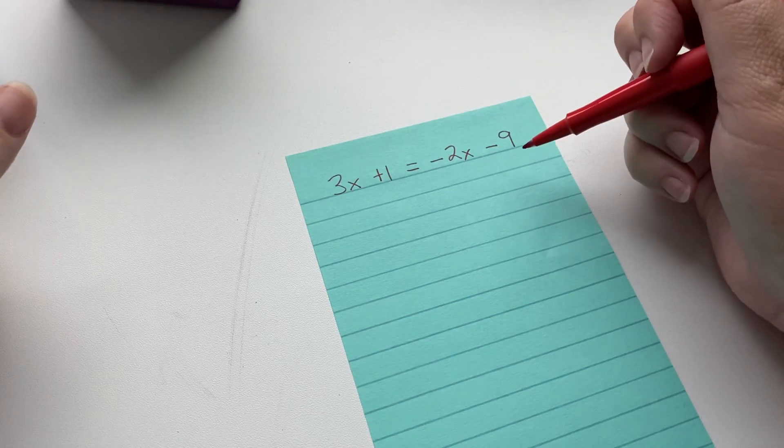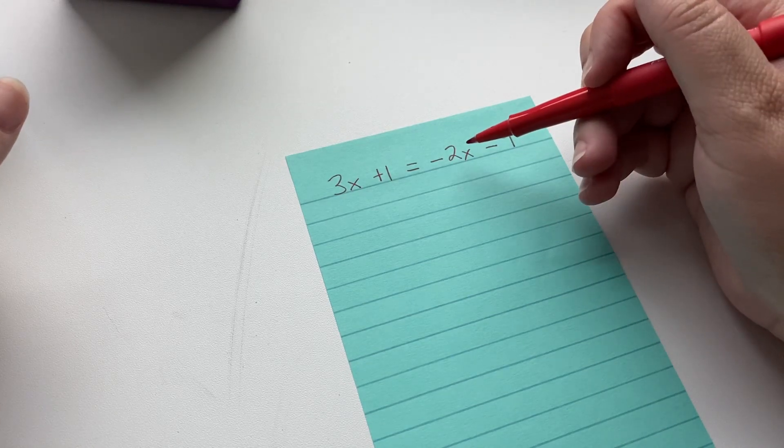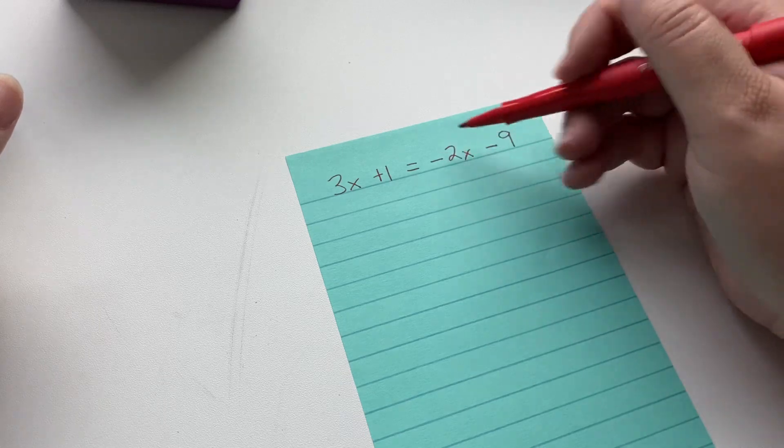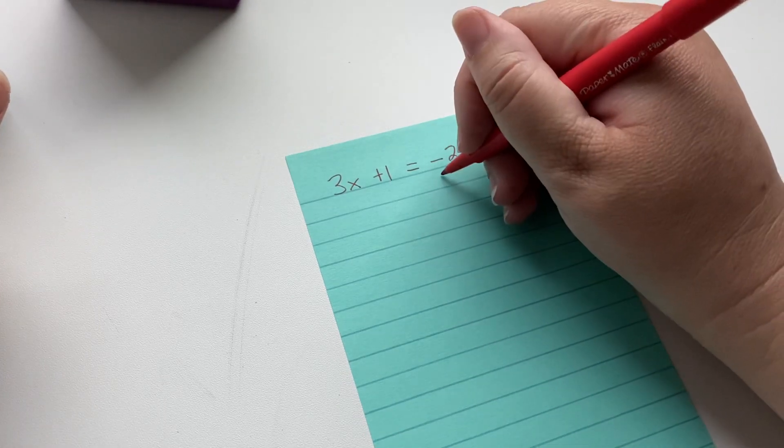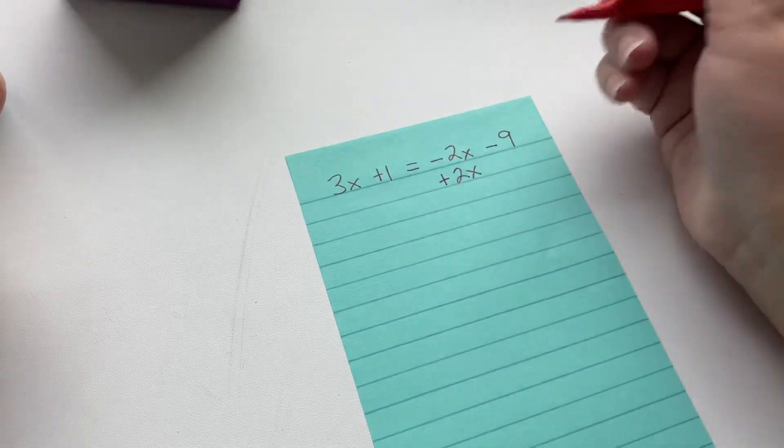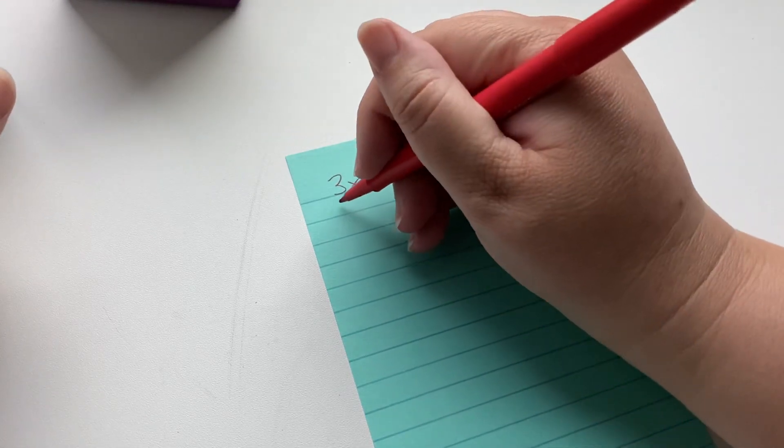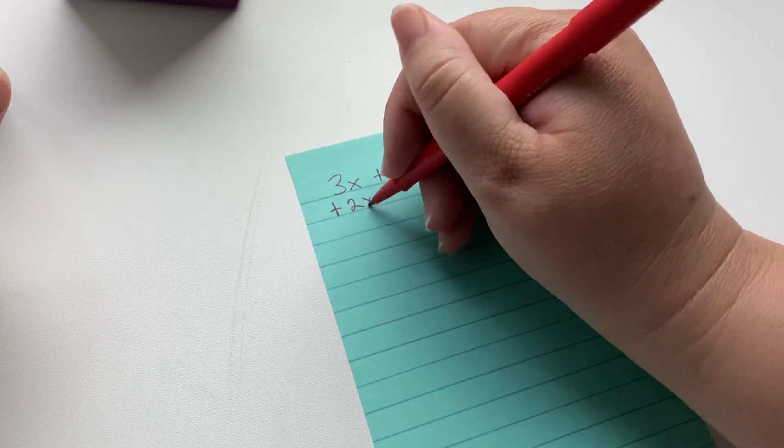And in this example, let's start with eliminating the x first. So over here, we can get rid of this negative 2x by adding 2x. This becomes zero, and we add 2x over here.